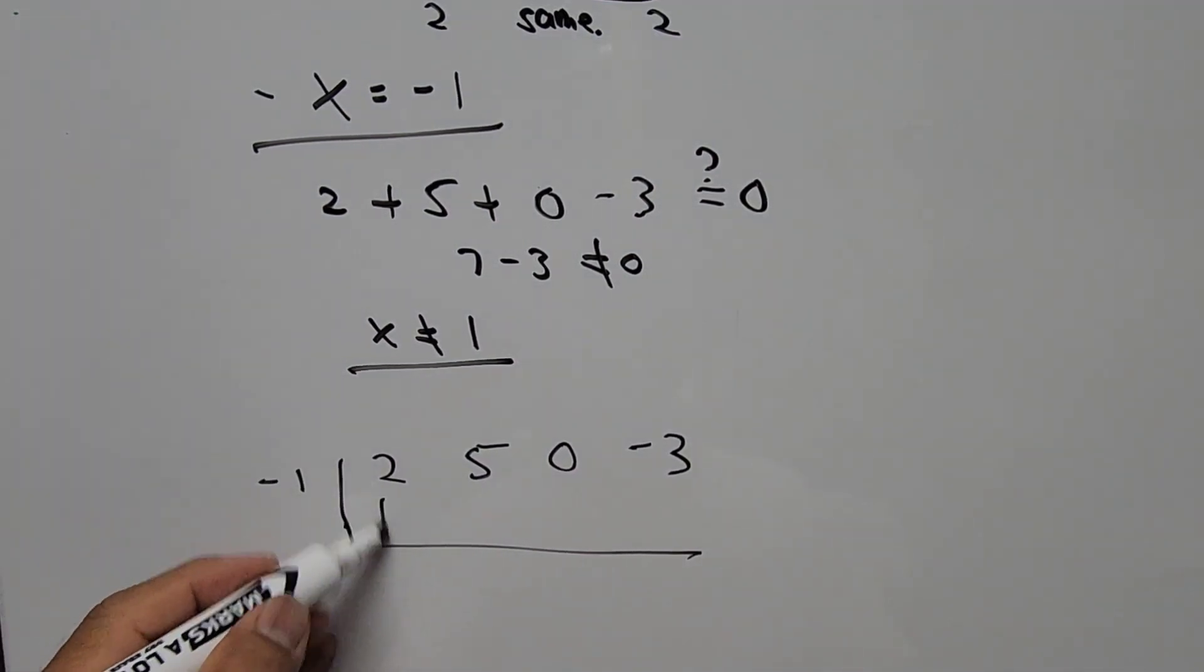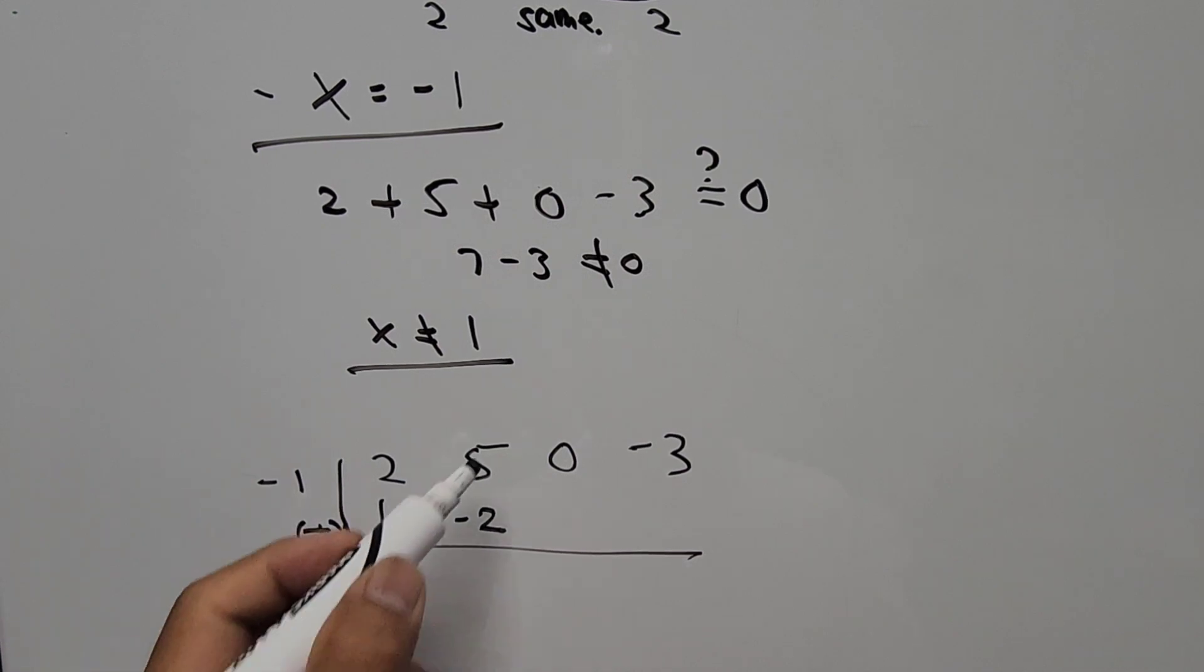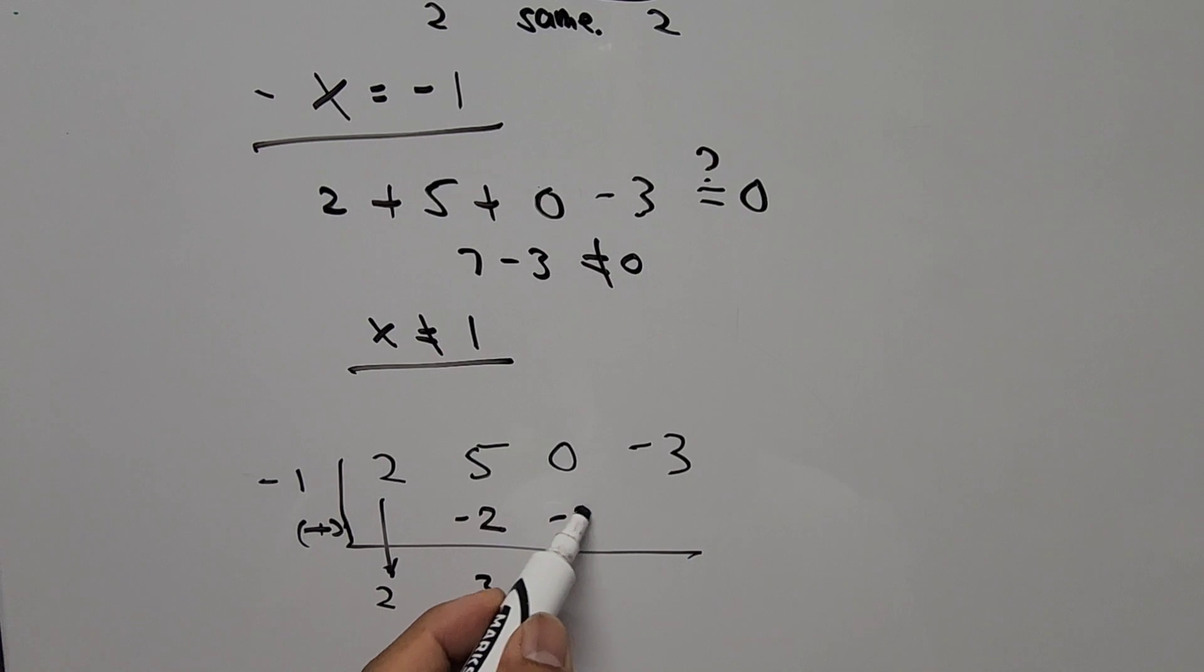And we bring down 2, and multiply -1 by 2 is equal to -2, then add. So we have positive 3 times -1, that's -3. Add again, that's -3. -1 times -3, that's positive 3. Then -3 plus 3 is 0. So remainder 0.